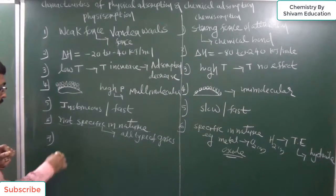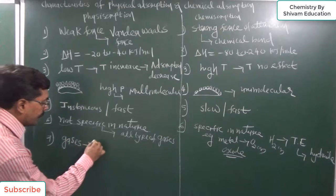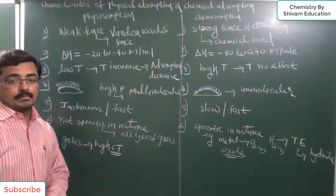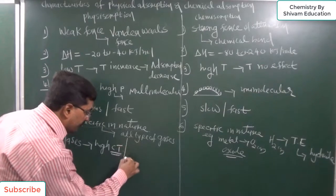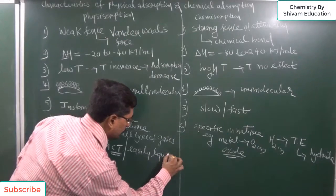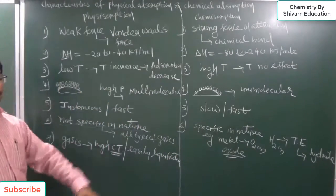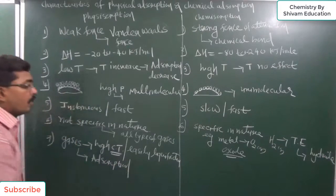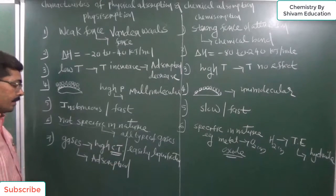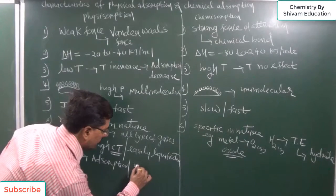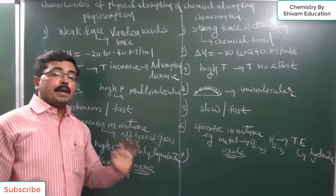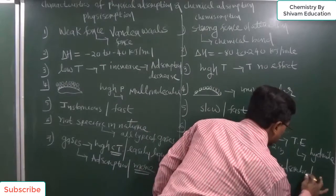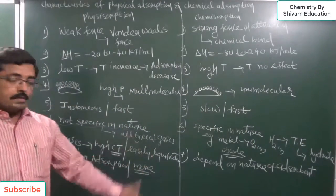One important point: in physical adsorption, gases having a high critical temperature — meaning gases that can be easily liquefied — adsorb in greater proportions. The easier the liquefaction, the more adsorption will occur. In chemical adsorption, adsorption depends on the nature of the adsorbent, as each adsorbent has a specific nature.